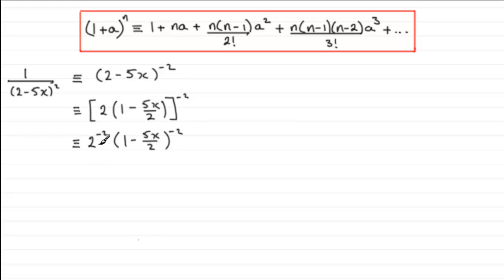Now we know that 2 to the minus 2 is 1 over 2 squared, 1 over 2 squared being a quarter. And now we've got this in the form of 1 plus a to the power n, where n is the minus 2 and a is minus 5x over 2, so we can expand this using the binomial expansion.